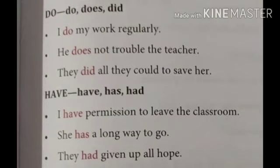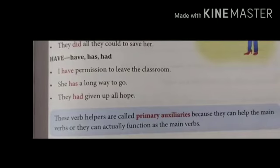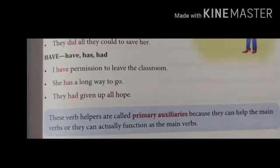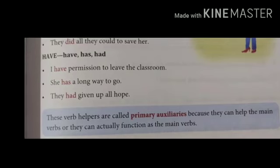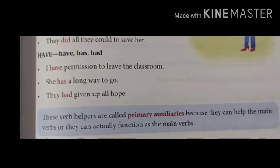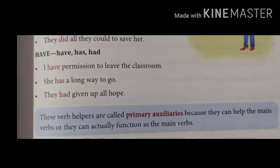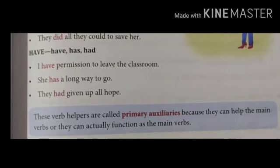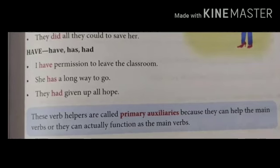These verb helpers are called primary auxiliaries because they can help the main verbs, or they can actually function as the main verb. For example: The boys do not play soccer — here do is the auxiliary verb. I am not invited to the party — here am is the be verb. So the be verbs are also called primary auxiliaries.